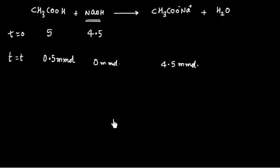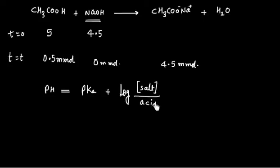Now to calculate the pH of solution, we can use the following equation: pH = pKa plus log of concentration of salt divided by concentration of acid. So this is the Henderson-Hasselbalch equation.